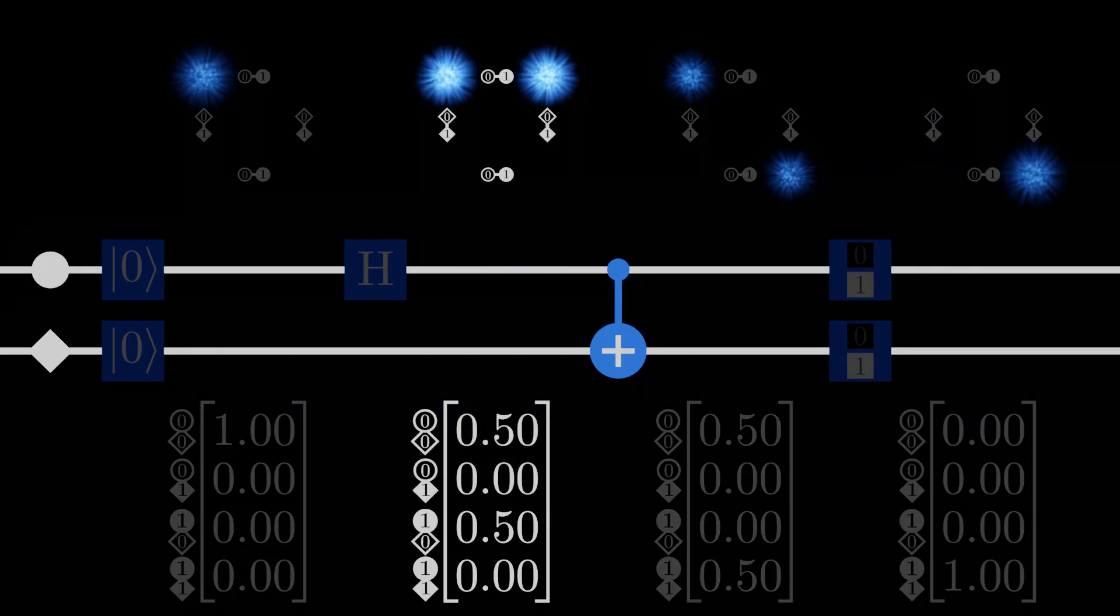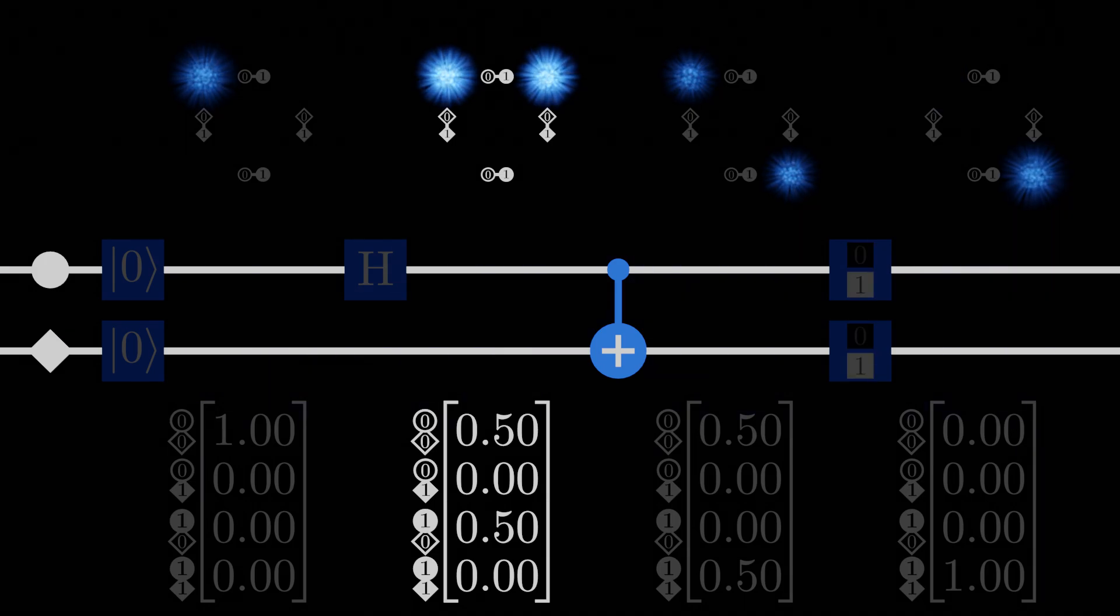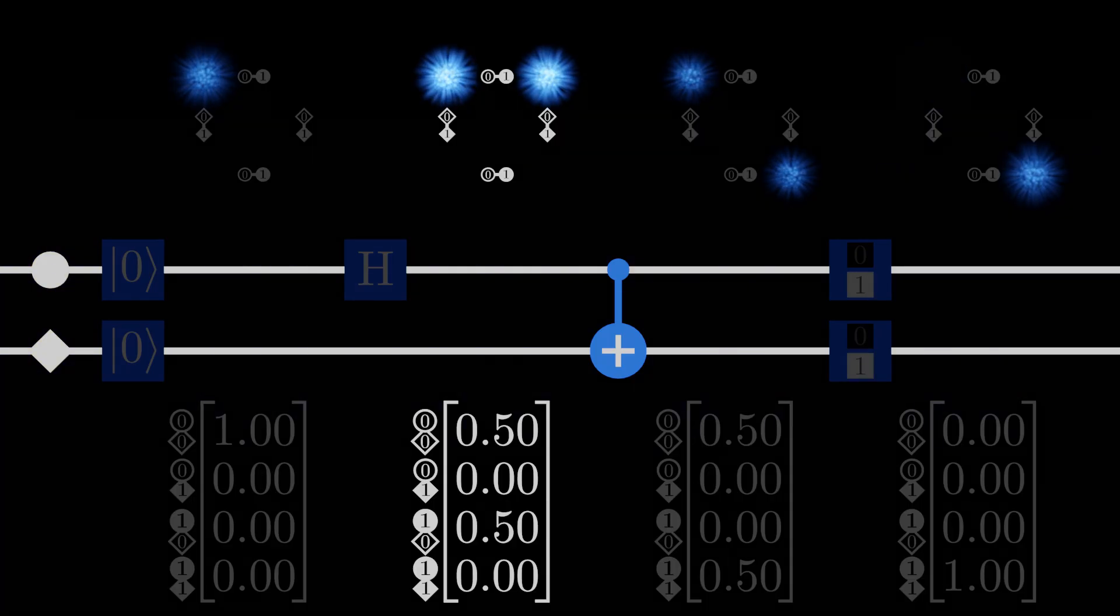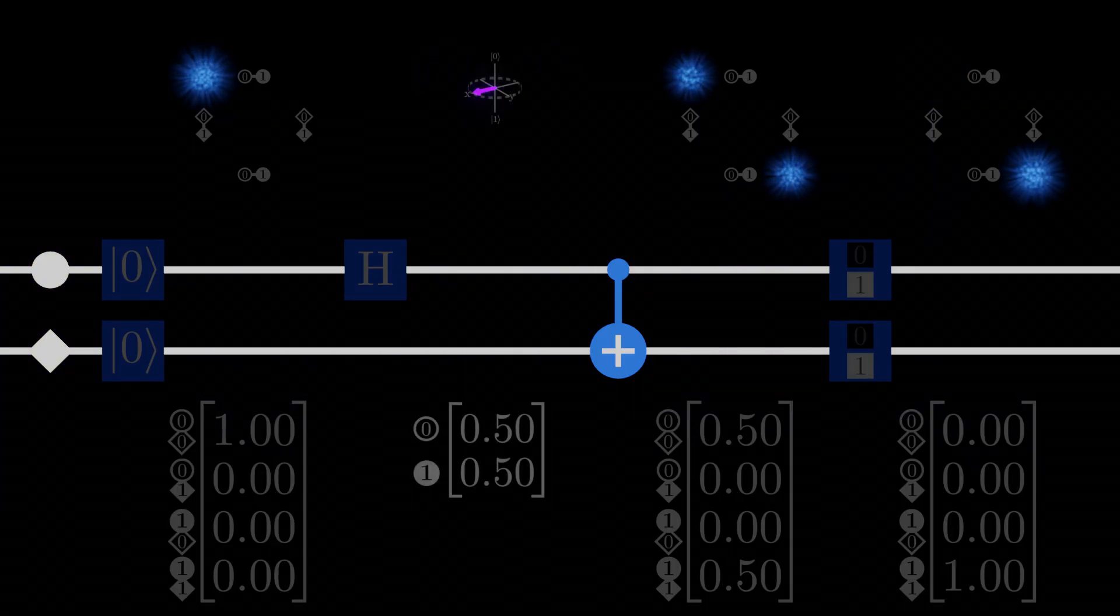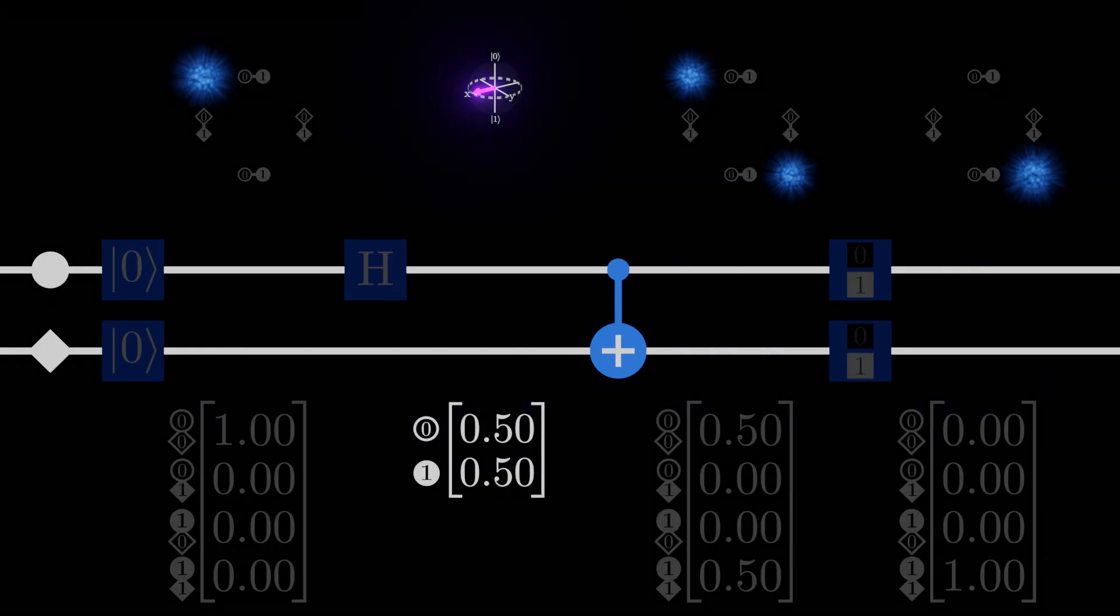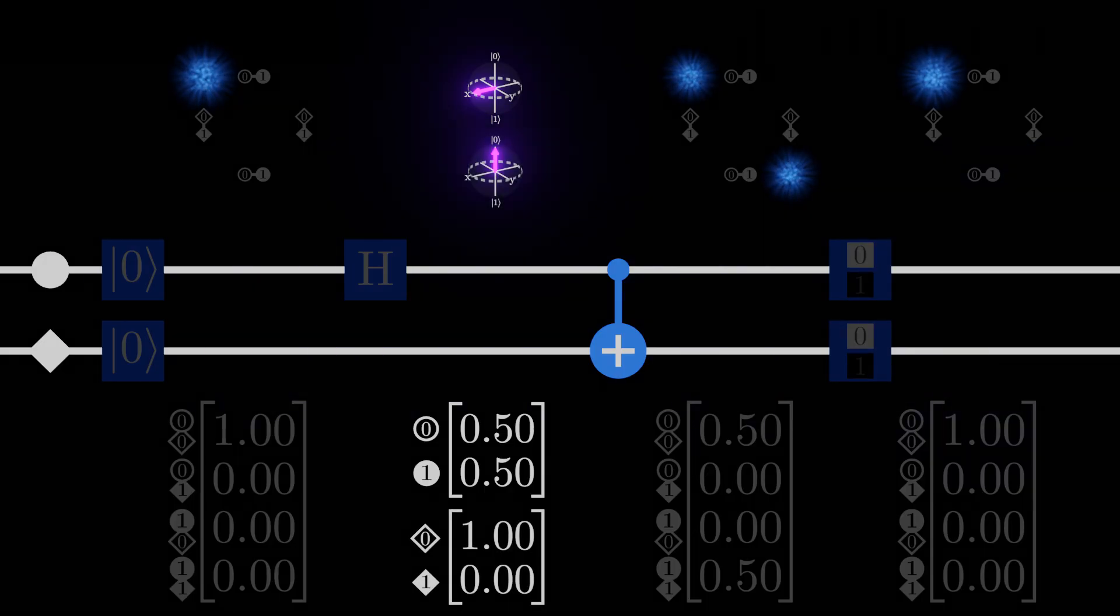Notice how, before this gate, the system of qubits is equally likely to be measured as zero-zero or one-zero. We could describe this without entanglement by saying that the first qubit is equally likely to be measured as zero or one, while the second qubit will always be measured as zero.